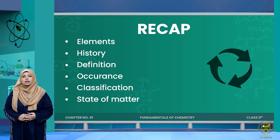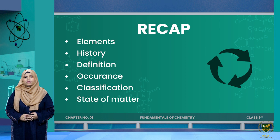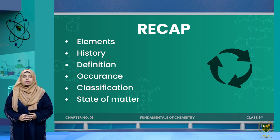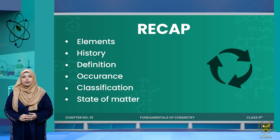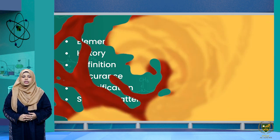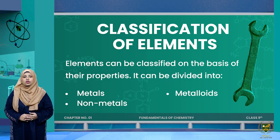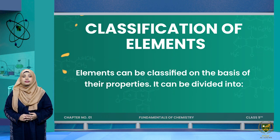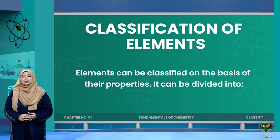In our previous lecture we started the topic of elements, which is part of the basic definitions from chapter number one, Fundamentals of Chemistry. We discussed the brief history of elements, modern definition of elements, occurrence of elements, and then started classification of elements. In the previous class we discussed classification on the basis of physical states of matter.